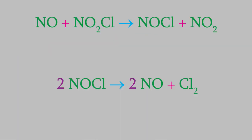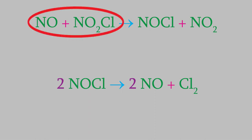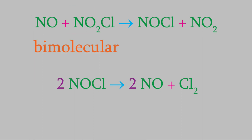Next, here are two second order reactions. In the first one, nitrogen monoxide and nitrochloride react to form nitrosochloride and nitrogen dioxide. That means that for every reaction, molecules of these two compounds must collide. Because there are two reactant molecules that participate in the reaction, it is a bimolecular reaction. In the second reaction, nitrosochloride reacts to form nitrogen monoxide and chlorine. In this case, there is only one compound on the reactant side but there are two molecules of it, meaning that two nitrosochlorides must collide, and that makes this another bimolecular reaction.